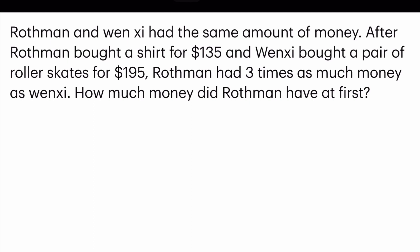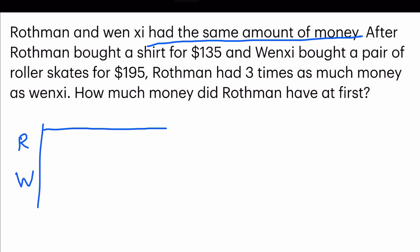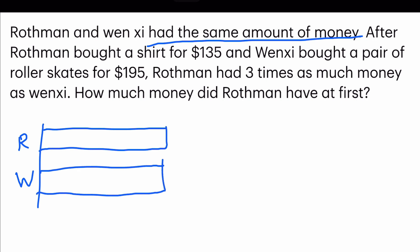Rothman and Wensi had the same amount of money. I'm going to draw a model for Rothman and Wensi having equal portions here. After Rothman bought a shirt for $135, I'm going to indicate that over here — $135 up to here.